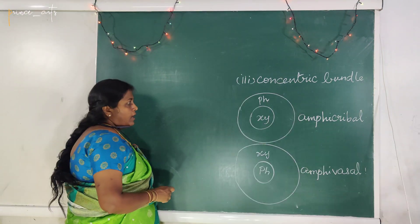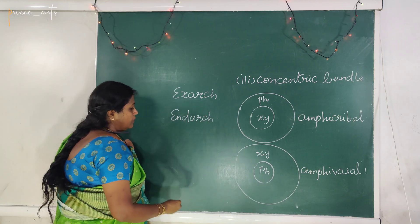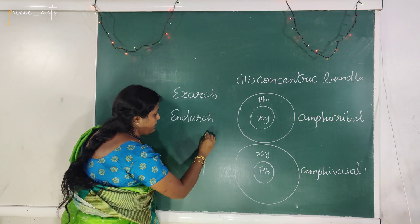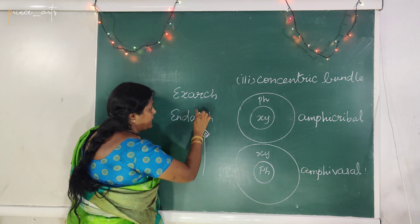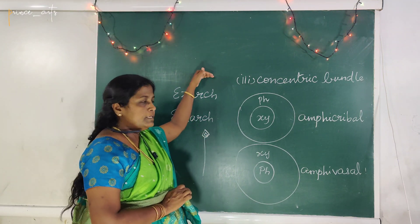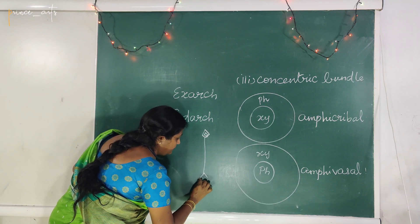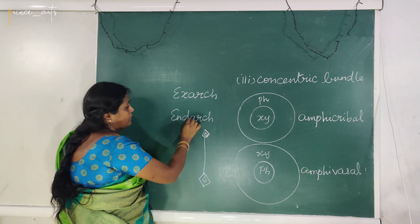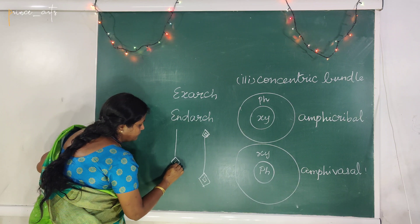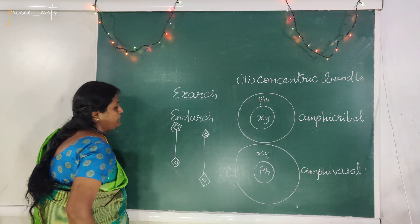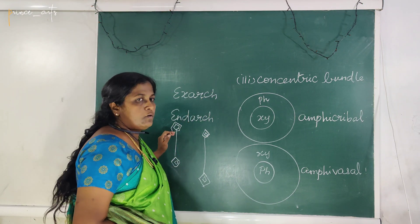If phloem is in the center and xylem surrounds it, then it is called amphivasal. There are also two conditions — exarch and endarch. In a strand of xylem, if protoxylem is present towards the periphery facing the epidermis, it is called exarch. If protoxylem is towards the pith and metaxylem towards the periphery, it is called endarch.